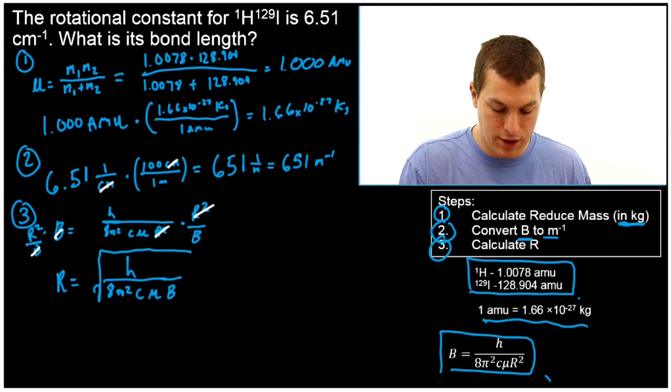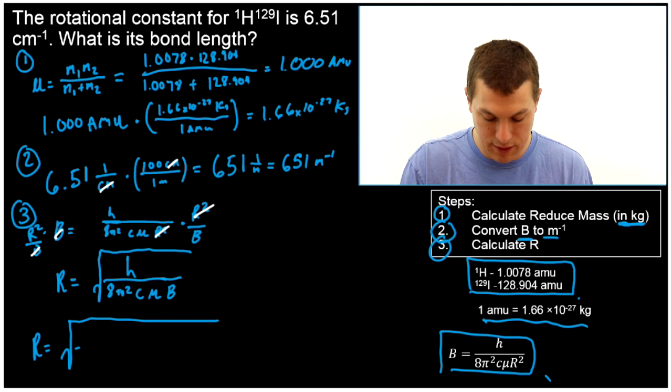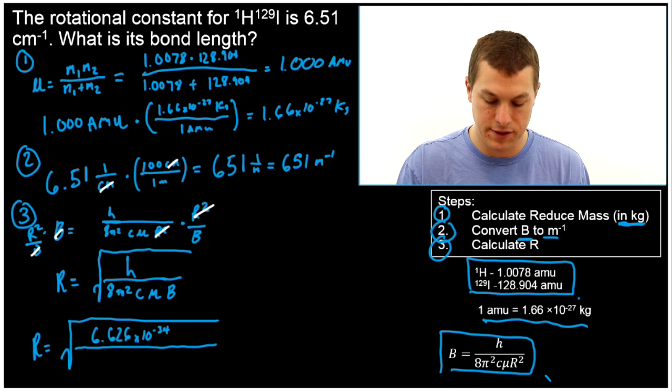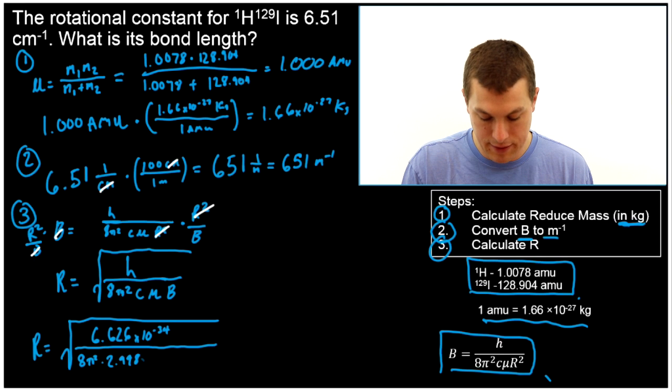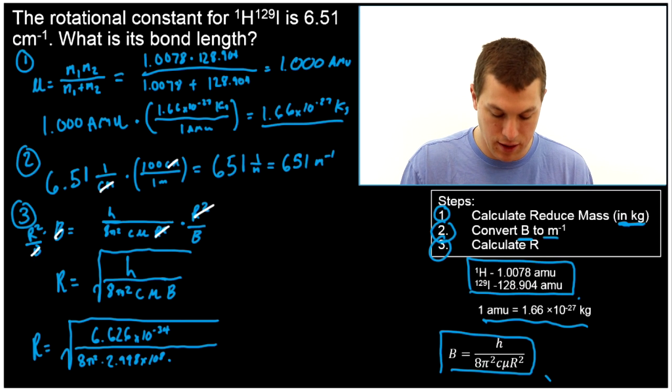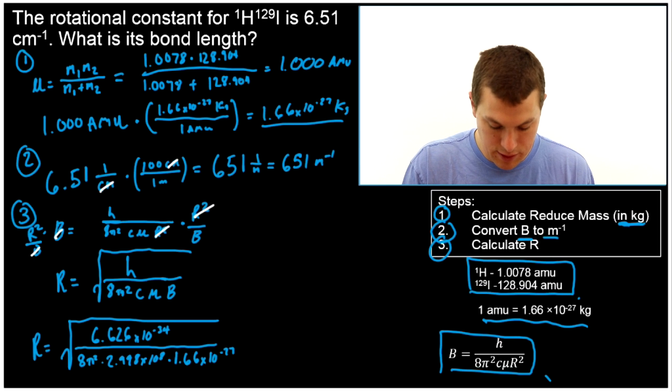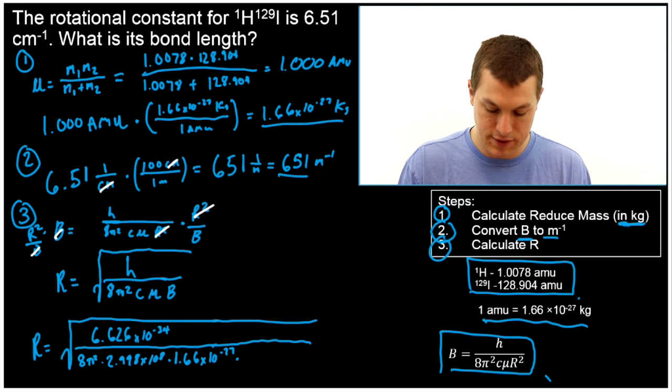Okay, so that's it. And now all we've got to do is plug in our constants, all the values we've calculated. So up top, we just have Planck's constant, which is 6.626 times 10⁻³⁴. And then we have 8π² times the speed of light, which is 2.998 times 10⁸ meters per second, times our reduced mass, which we calculated up here. So that's 1.66 times 10⁻²⁷. Last thing we need to plug in, our rotational constant, 651 per meters.